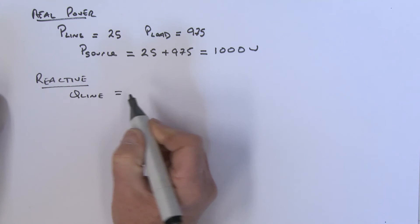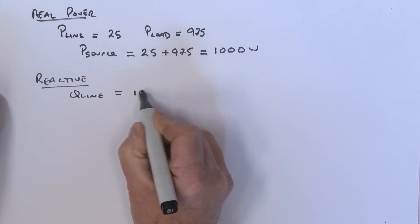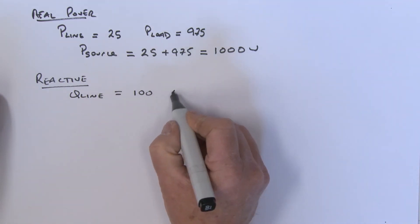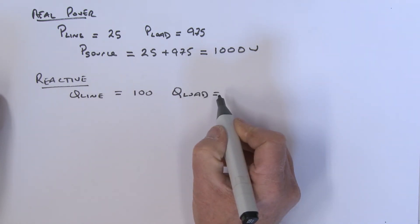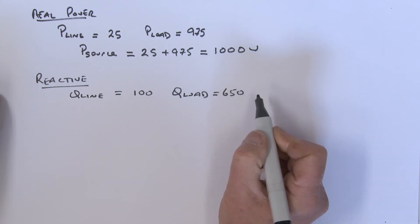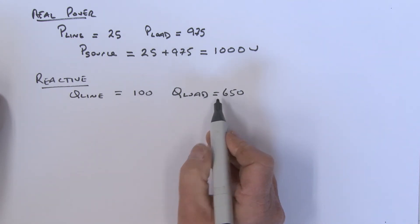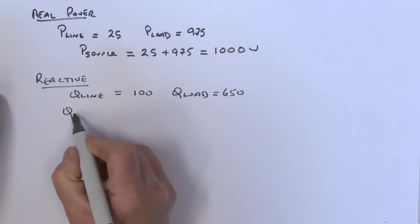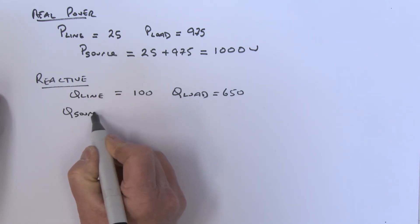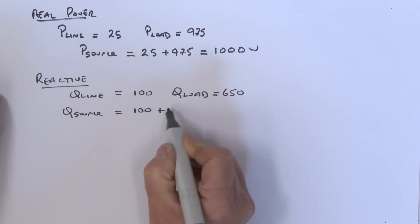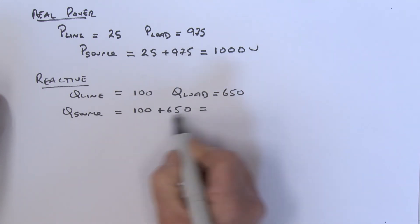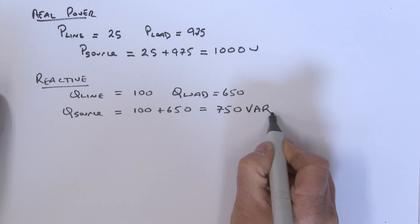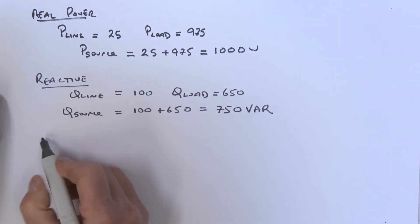Looking at reactive power: the reactive power in the line was 100 volt-amps reactive and the reactive power in the load was 650 volt-amps reactive. Both are positive, so adding them gives 100 + 650 = 750 volt-amps reactive, which matches the reactive power supplied by the source.